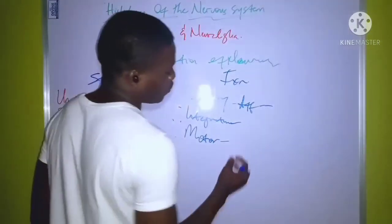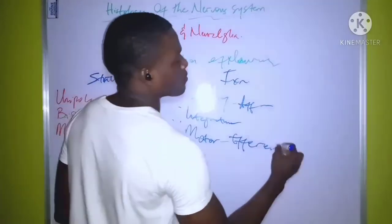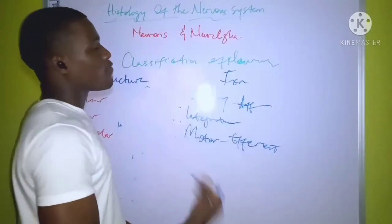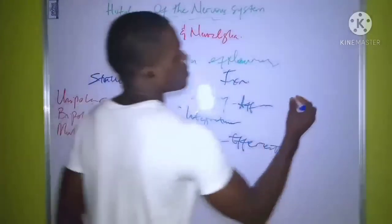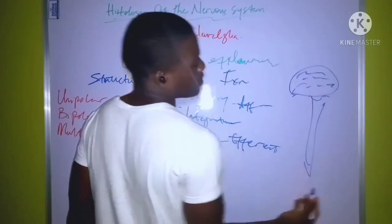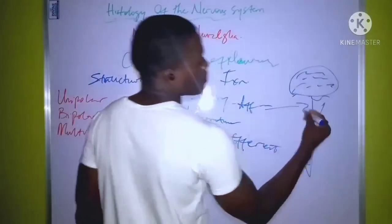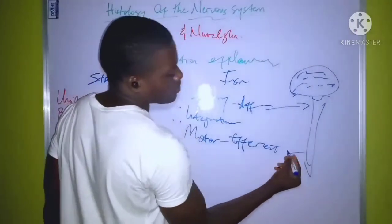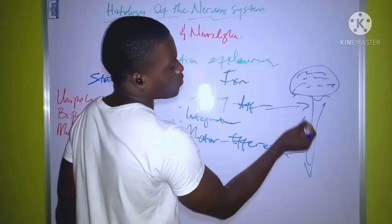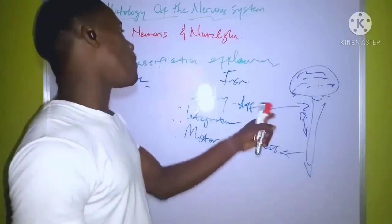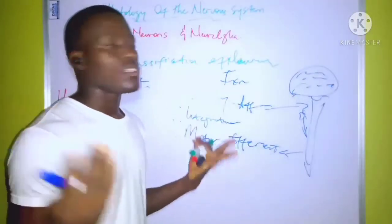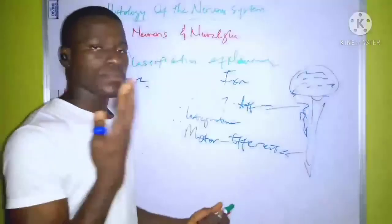The motor neuron is also called the efferent neuron. The function of the efferent neuron is to send impulse back to the sites where it was received. The afferent neuron moves towards the CNS, while the efferent neuron moves away from the brain and CNS. The sensory neurons are mainly found on the surface of the skin and sensory organs, as they receive impulse from the body surface.